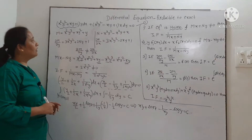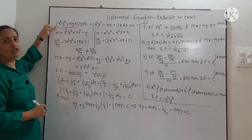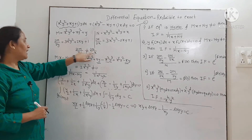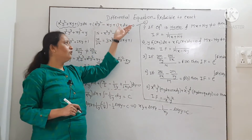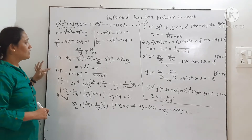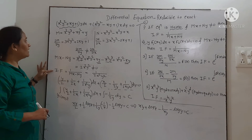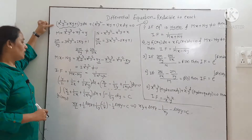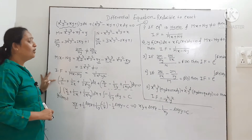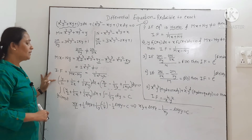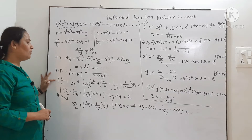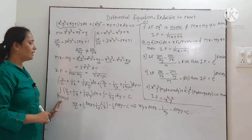This is the procedure to solve the equation. First, compare the equation with M dx + N dy. Check whether the equation is exact or not. If it is not exact, check whether the first rule is applicable; if not, check the second rule; if not, check the third rule, and so on — finding the integrating factor. Once you get the integrating factor, multiply it to the given differential equation. After multiplying, the equation is exact, and we find its solution using the formula: integral M dx treating y as constant, plus integral of terms of N free from x, dy = c.